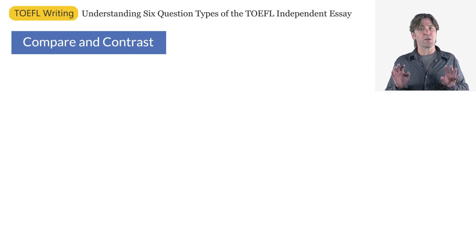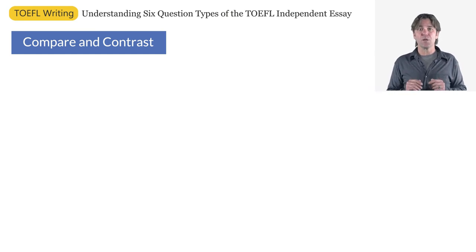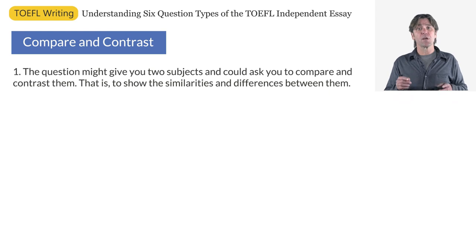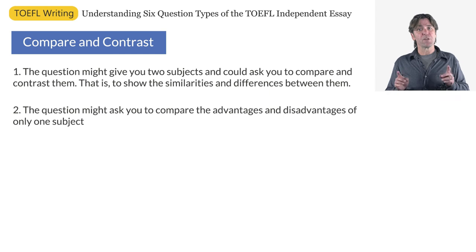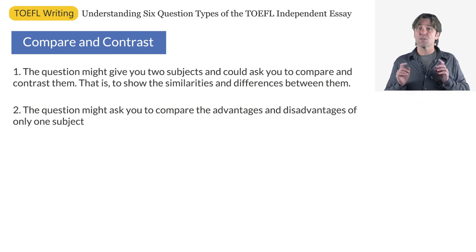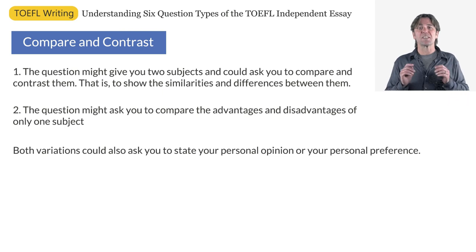This is our last question type on our list and it is a little tricky. The compare and contrast question can fool you, so you need to pay attention to what it's really asking. Generally speaking, you will see two variations of this type of question. First, the question might give you two subjects and ask you to compare and contrast them — that is, to show the similarities and differences between them. However, the question might ask you to compare the advantages and disadvantages of only one subject. Read the question carefully. Both variations could also ask you to state your personal opinion or your personal preference.